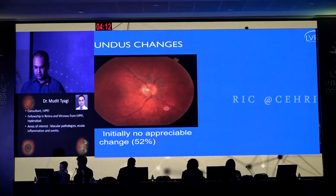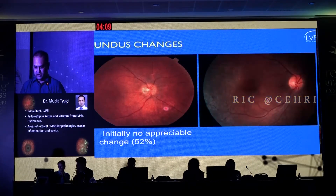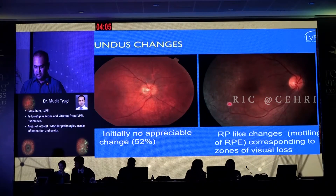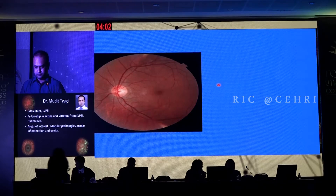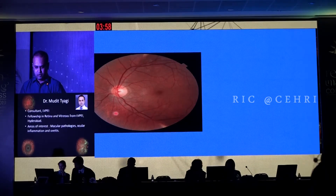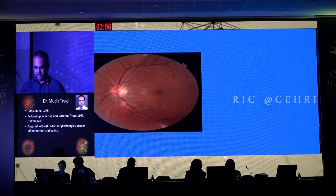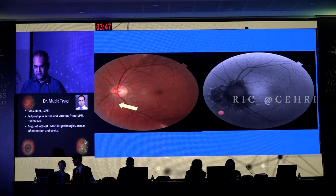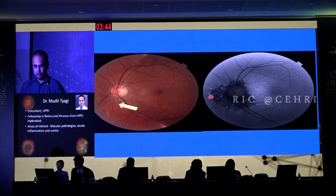Initially there may not be any significant appreciable changes — this is the case in nearly 50% of cases. But subsequently down the line you might develop something like these RP-like changes, mottling, and these correspond to the areas of visual loss. If you look at this photograph carefully, you will be able to appreciate some changes around the peripapillary lesion.